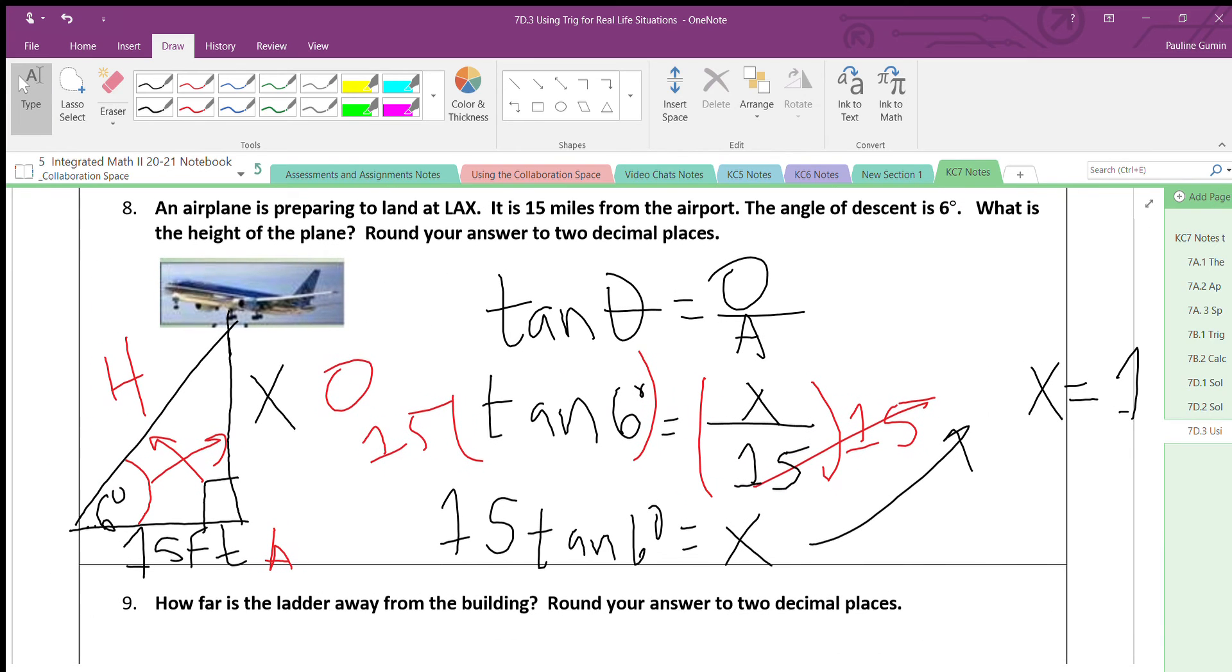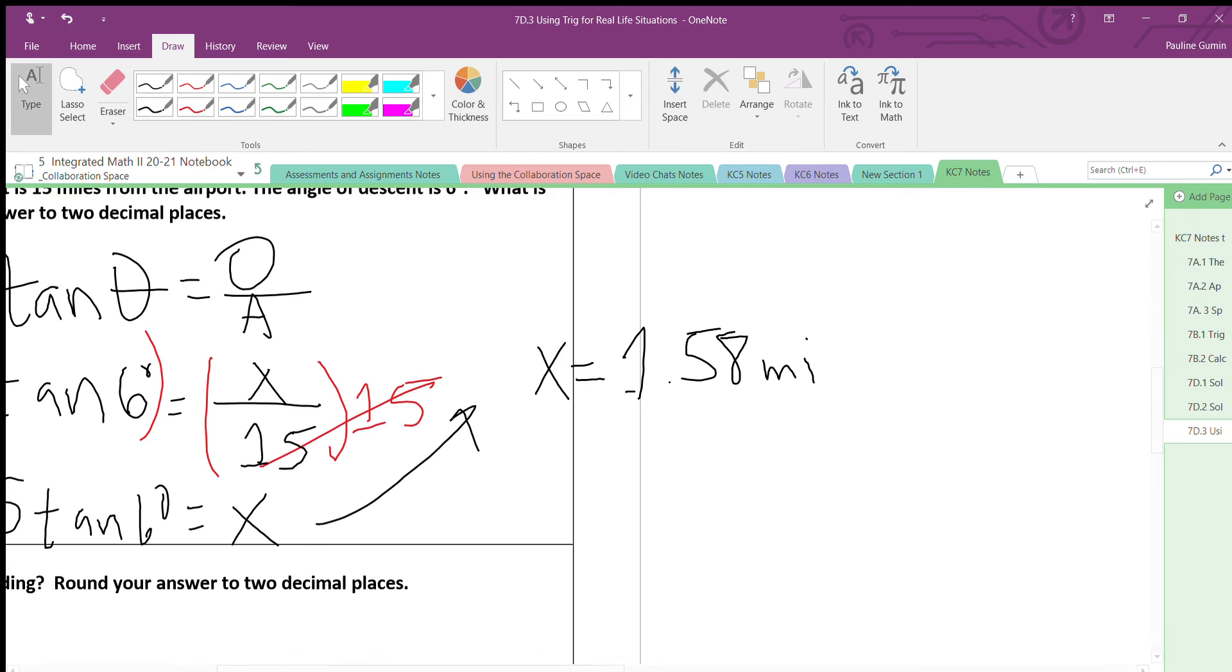Did I write feet there? Okay. You know, that doesn't make any sense. It was 15 feet from the... Jeez. Oh, Miss Gooman. Alright, it's 1.58 miles up in the air. So I'm pretty sure this airplane is getting ready to land.